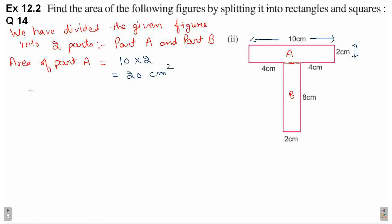Now let's find the area of part B. In part B, the shorter side length is given as 2 cm, and the longer side is given as 8 cm.